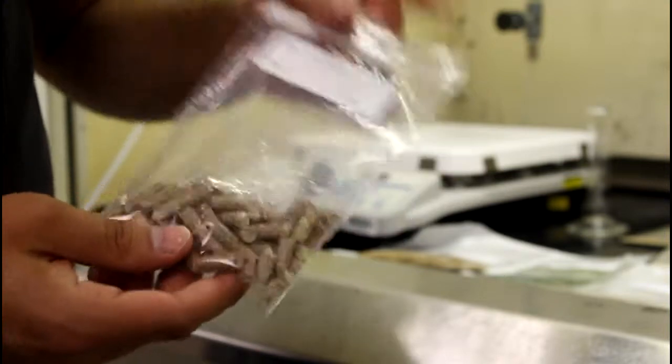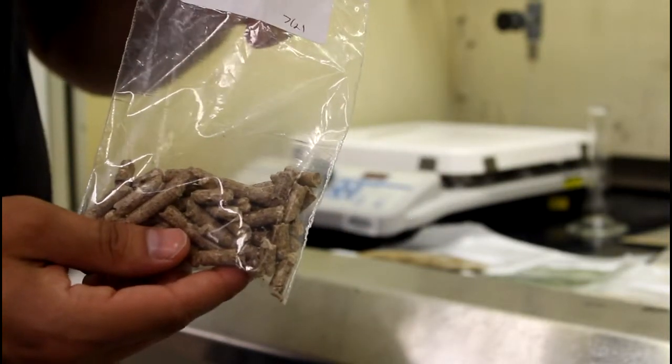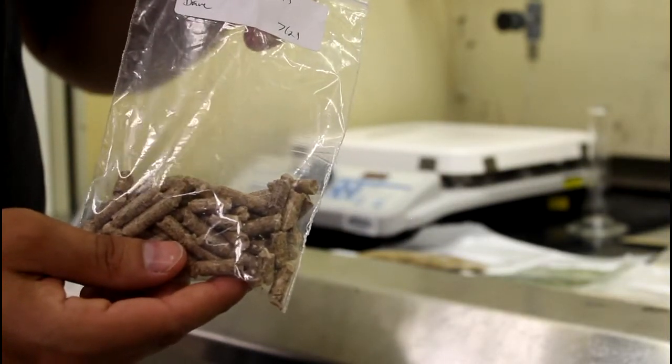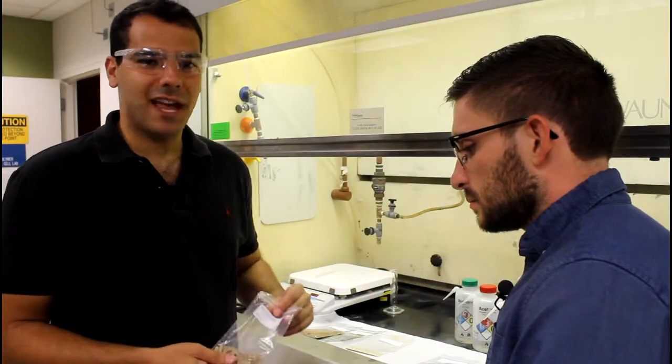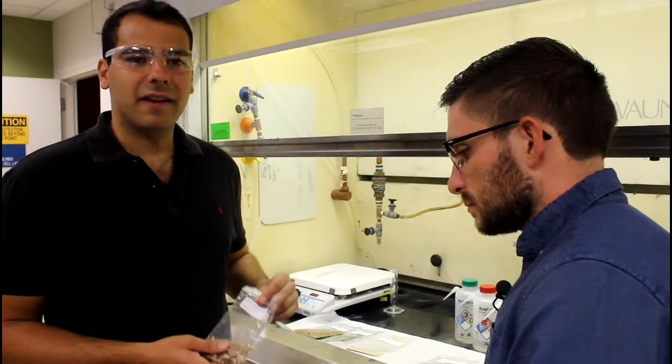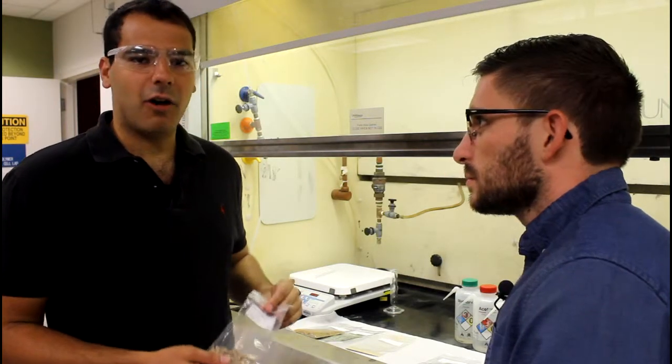So the next one we have is wood pellets, and you may recognize them from what you have in your home. A lot of people use them in their wood fire stoves, but it's also good to be broken down into other compounds. It's got a lot of cellulose and hemicellulose, so it can make a lot of aromatic compounds, which we really like and want.